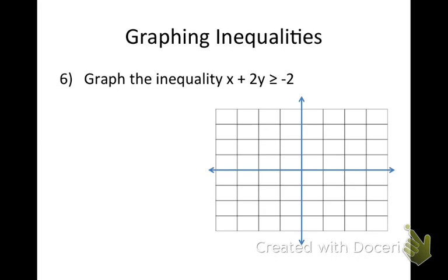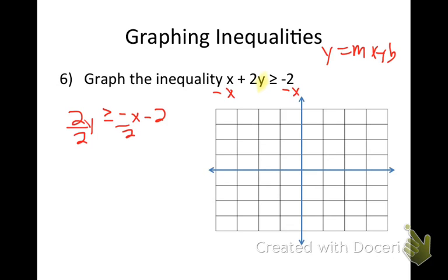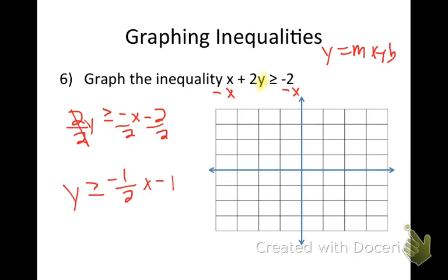A great question: I always want to graph in slope-intercept form, y equals mx plus b. So I need to solve for y. For x plus 2y is greater than or equal to negative 2, I subtract x: 2y is greater than or equal to negative x minus 2. Then divide by 2, giving y is greater than or equal to negative 1 half x minus 1. I don't flip the sign here because I'm not dividing both sides by a negative. If that coefficient were negative 2, then I would flip the sign.